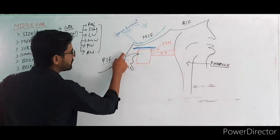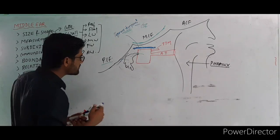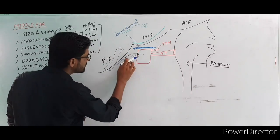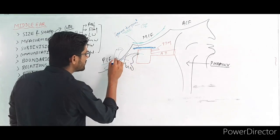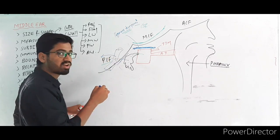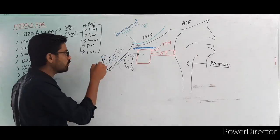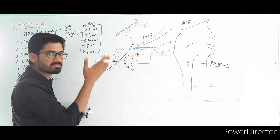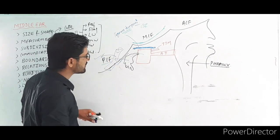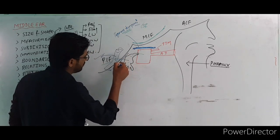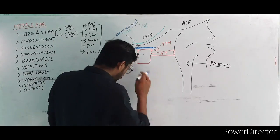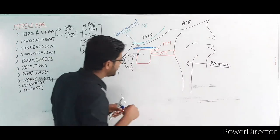In the posterior part there is the sigmoid sinus. If any infection is in the mastoid cavity, it can easily reach the sigmoid sinus, causing thrombophlebitis. From there the infection may spread backwards to the pons, medulla, or cerebellum. There is also a thin plate separating the mastoid cavity from the posterior cranial fossa.